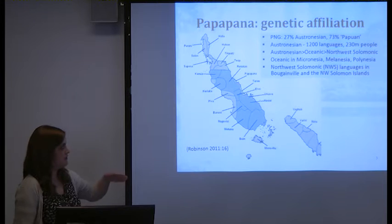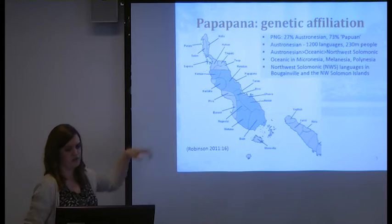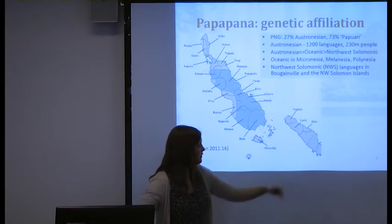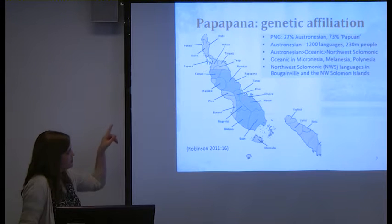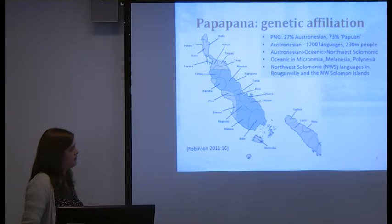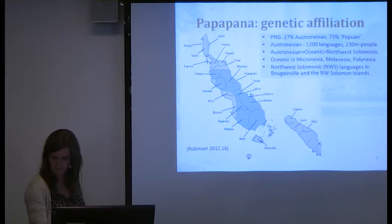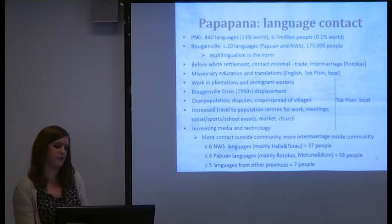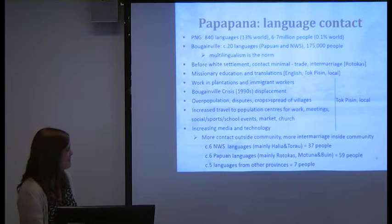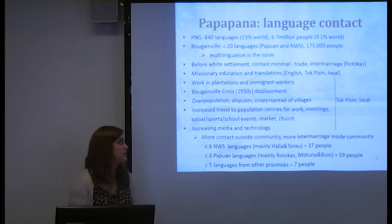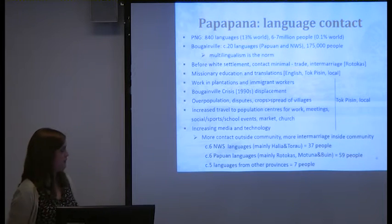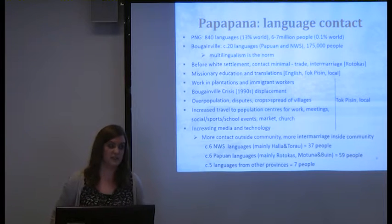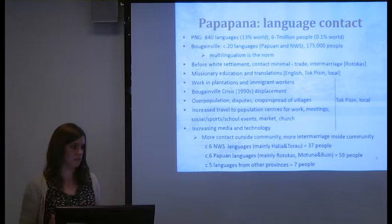The Northwest Solomonic languages are spoken in Bougainville and the Northwest Solomon Islands. There are also Papuan languages on this small island, showing considerable linguistic diversity. Papua New Guinea has 840 languages — 13% of the world's languages — but only 6 to 7 million people, just 0.1% of the world's population, representing massive linguistic diversity. In Bougainville there are about 20 languages, both Papuan and Northwest Solomonic, but only 175,000 people, so multilingualism is the norm.